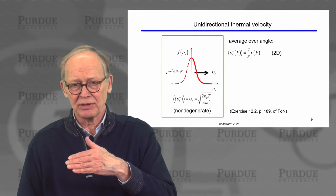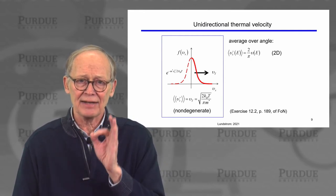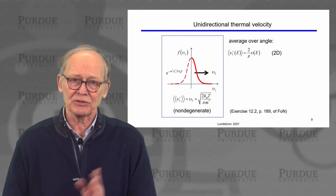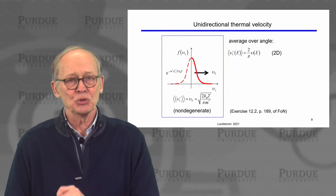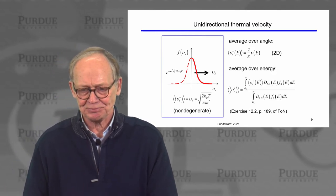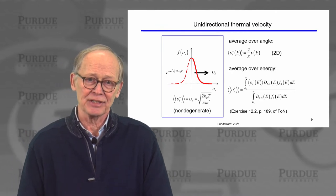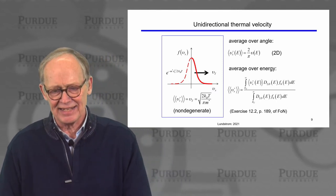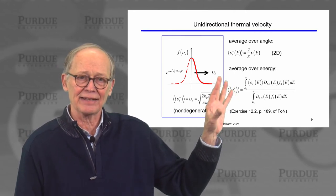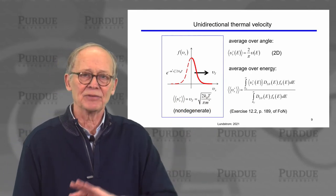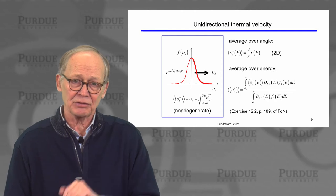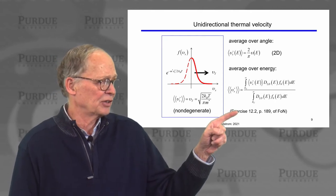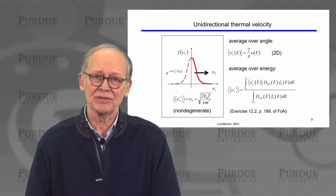The double-bracket averages: one average is over angle, because in two dimensions the electrons are pointed in various directions, and we want the average x-directed velocity. When you do that averaging over angle, the average velocity of electrons distributed uniformly across those angles is 2 over pi times the magnitude of the velocity. We also have to average over energy, since electrons are spread over a distance on the order of kT. The reference in the Fundamentals of Nanotransistors notes shows how that calculation goes.